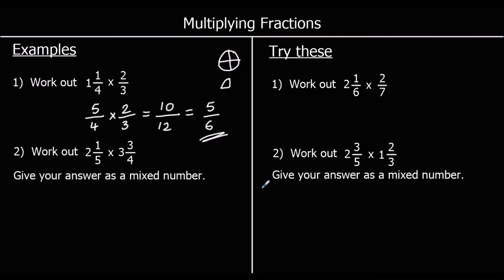Question two: we've got two and one-fifth times three and three-quarters. We need to convert them to top-heavy first. Two whole ones in fifths are ten-fifths, plus one-fifth is eleven-fifths. So two and one-fifth is eleven-fifths. For three and three-quarters, three whole ones is twelve-quarters, and twelve-quarters plus three-quarters is fifteen-quarters. So we've got eleven-fifths times fifteen-quarters.